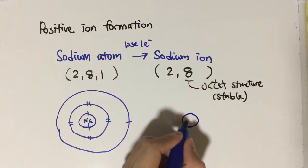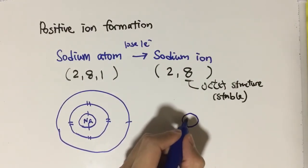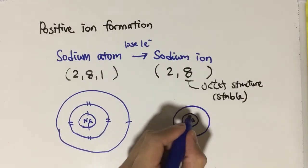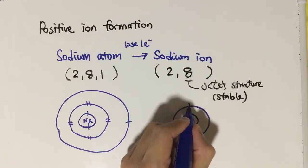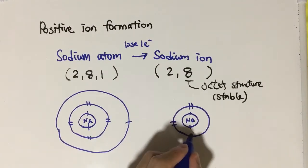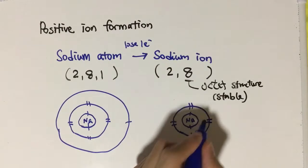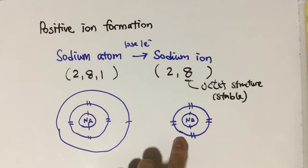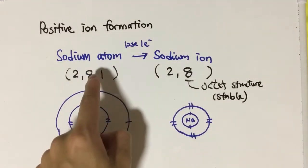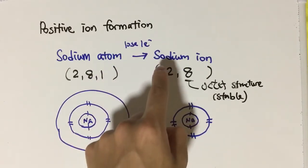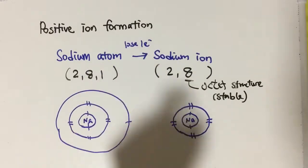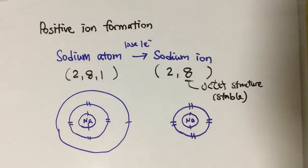You also have to draw the two electron shells. After we draw the two electron shells, we have to add one more thing because sodium atom actually loses one electron to become the sodium ion. Sodium ion actually has one less electron than sodium atom. Let's consider the charge.